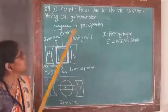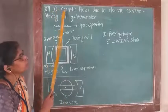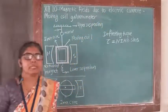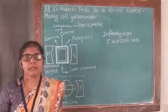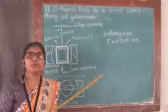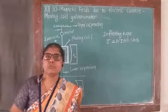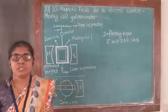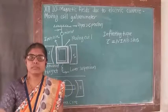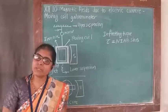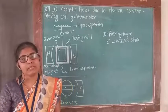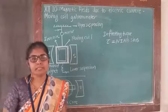Hello students. We are discussing the chapter magnetic fields due to electric current. In the previous chapter we discussed about voltmeter and ammeter — how a moving coil galvanometer is converted into a voltmeter and ammeter. We know that the moving coil galvanometer is used to detect current, the voltmeter is used to measure potential difference across any component in the electric circuit or to measure voltage of the battery, and the ammeter is used to measure current in the circuit.